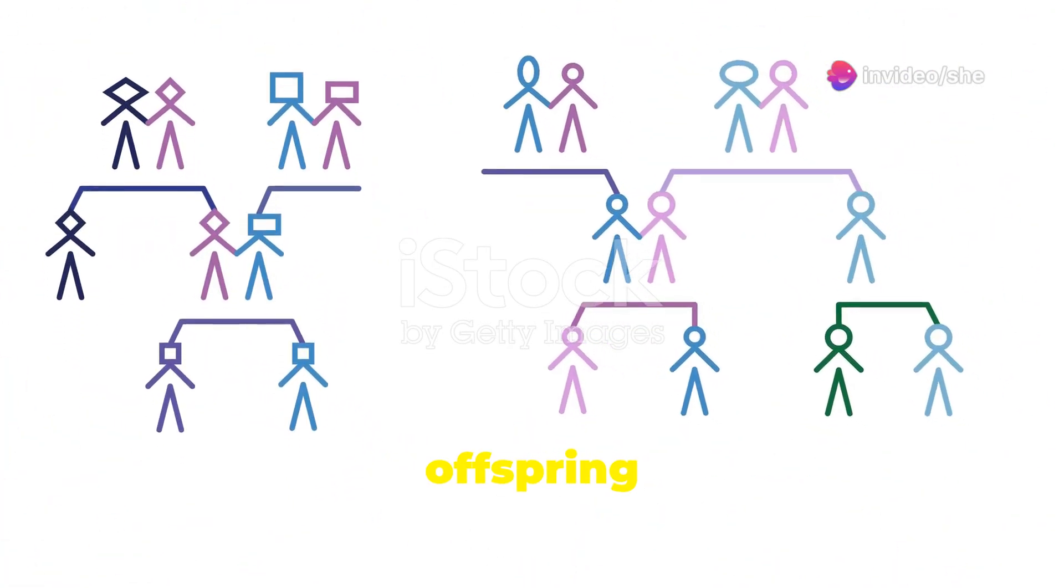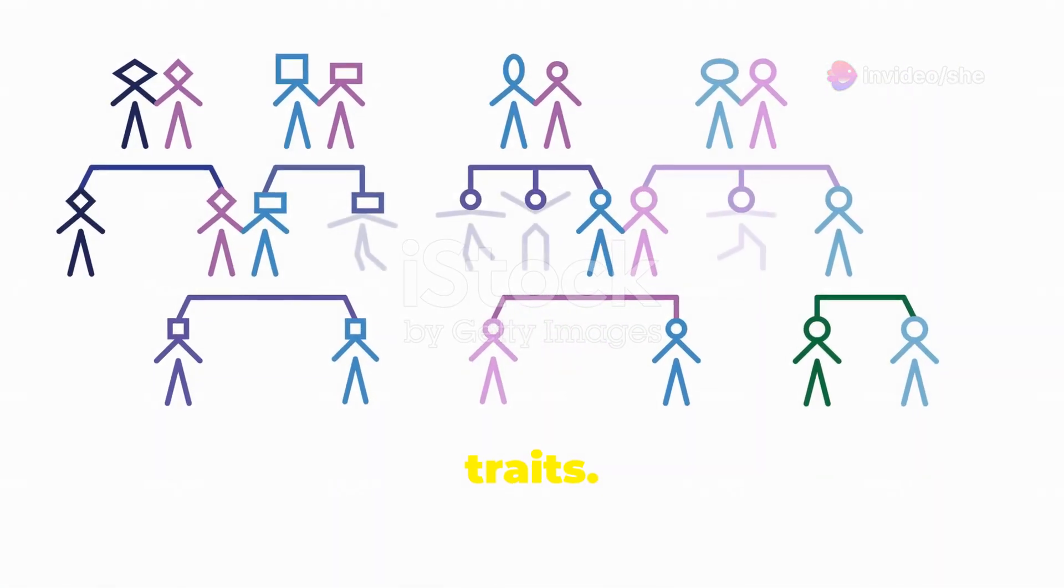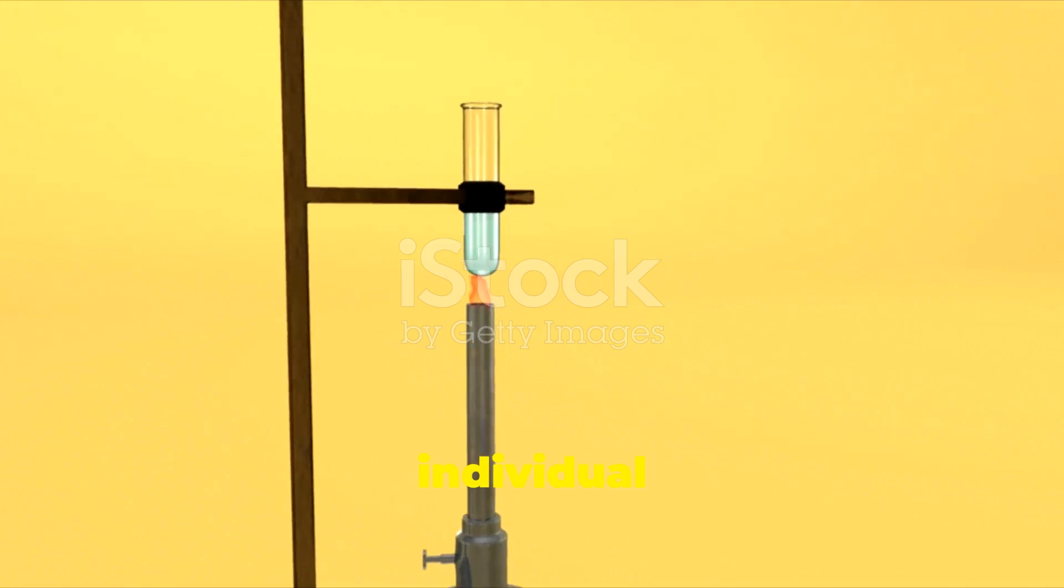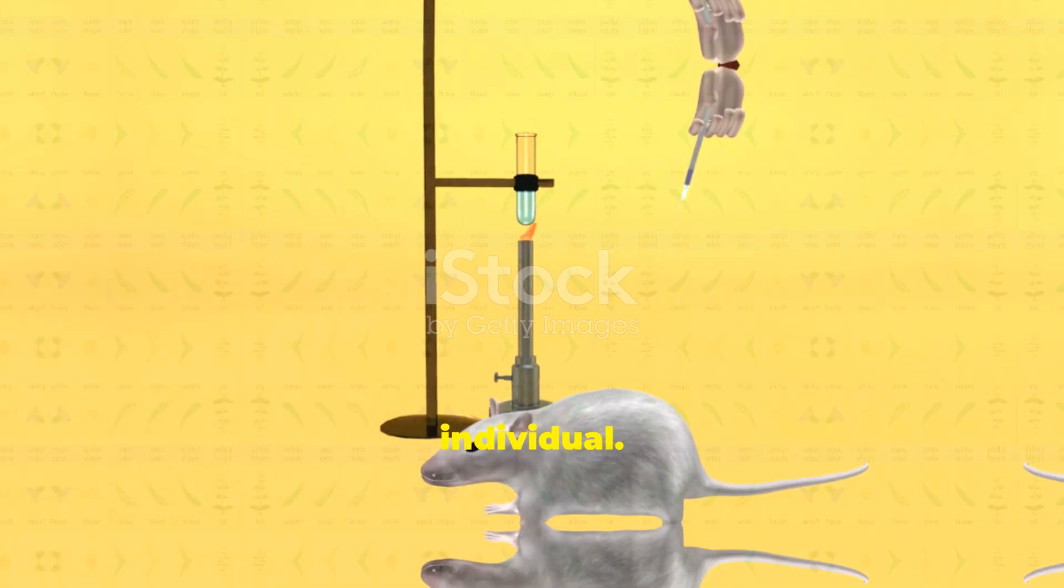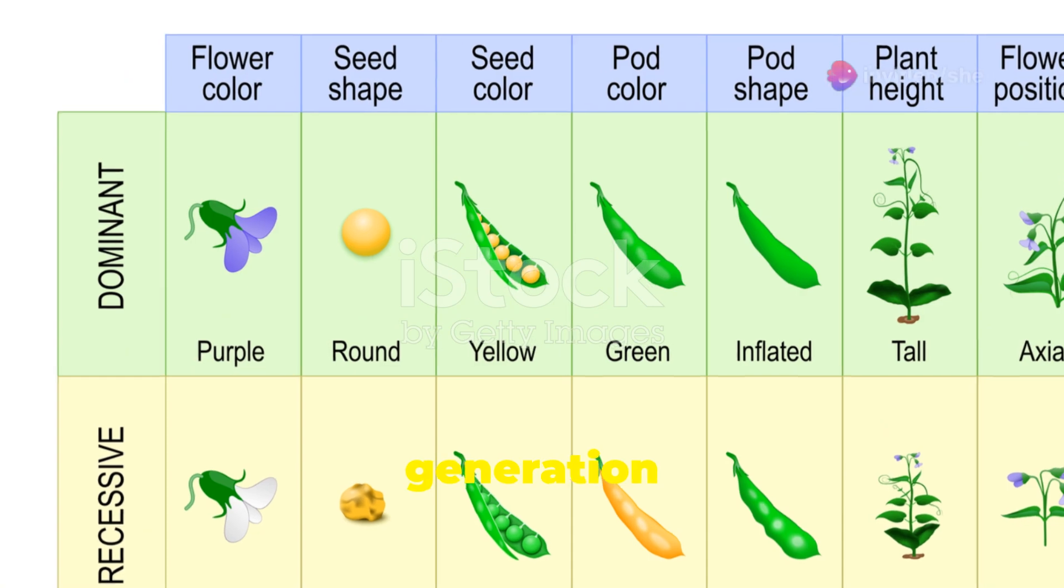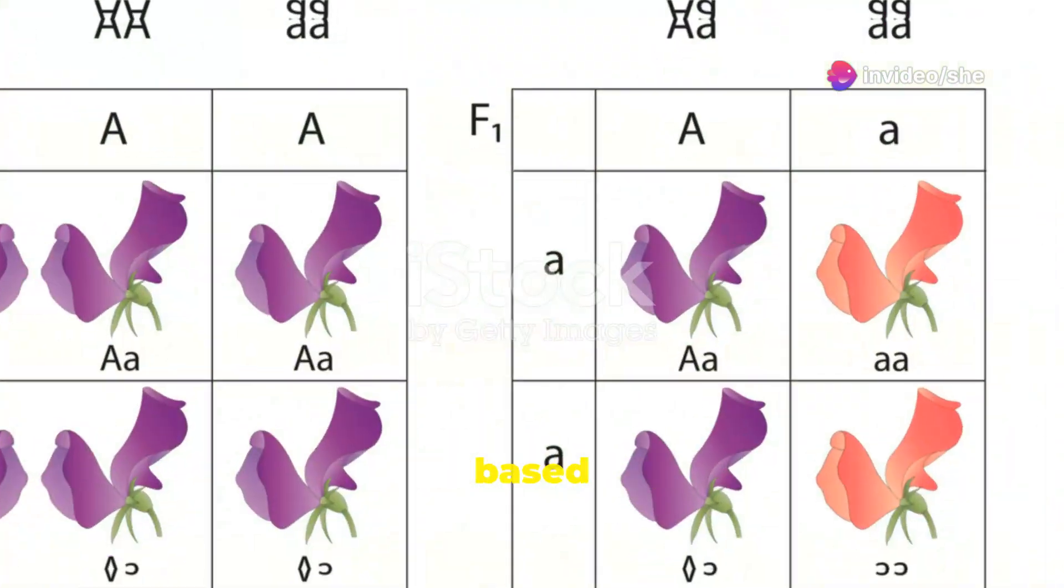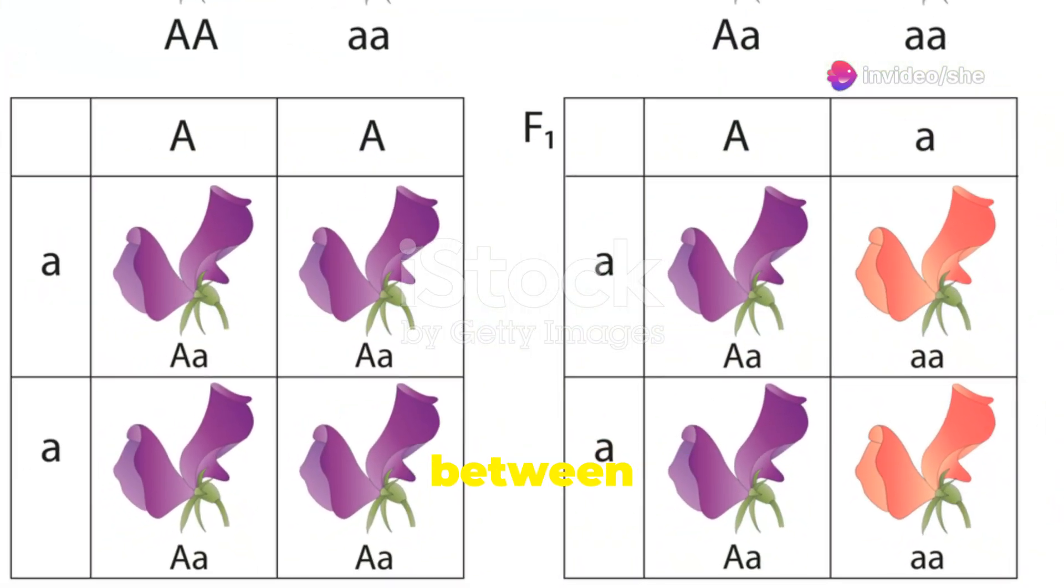F1 generation: the resulting offspring will all be heterozygous for both traits. Test cross: an F1 individual is then crossed with a homozygous recessive individual. F2 generation: the F2 generation will show a variety of phenotypes based on the recombination frequency between the two genes.